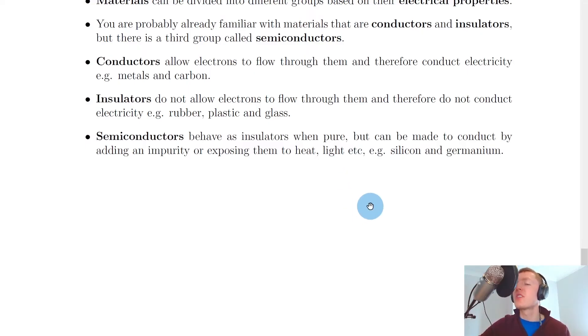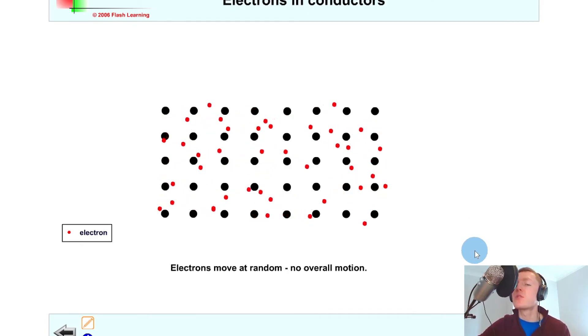I'm just going to show you a quick simulation of how electrons actually move inside a material. So let's imagine you were able to zoom in on a cross section of a conducting material, where the black dots here represent the nucleus of an atom and we've got the red dots which represent electrons that move about randomly in all directions.